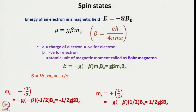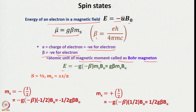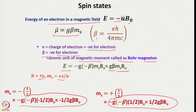The energy of an electron in a magnetic field is denoted by μ·B₀, where μ = G·β·Ms and β = eħ/(4πmc). Here e is the charge of the electron (negative for an electron), and β is the Bohr magneton — the atomic unit of magnetic moment. The energy simplifies to E = G·β·Ms·B₀. When Ms equals −½ and when Ms equals +½, the corresponding expressions give the two energy levels.